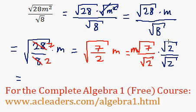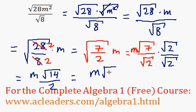So we have m root 7 times root 2. Root 7 times root 2 is just root 14, all over root 2 times root 2 is root 4, which is equivalent to 2. So our final answer is basically m root 14 all over 2.